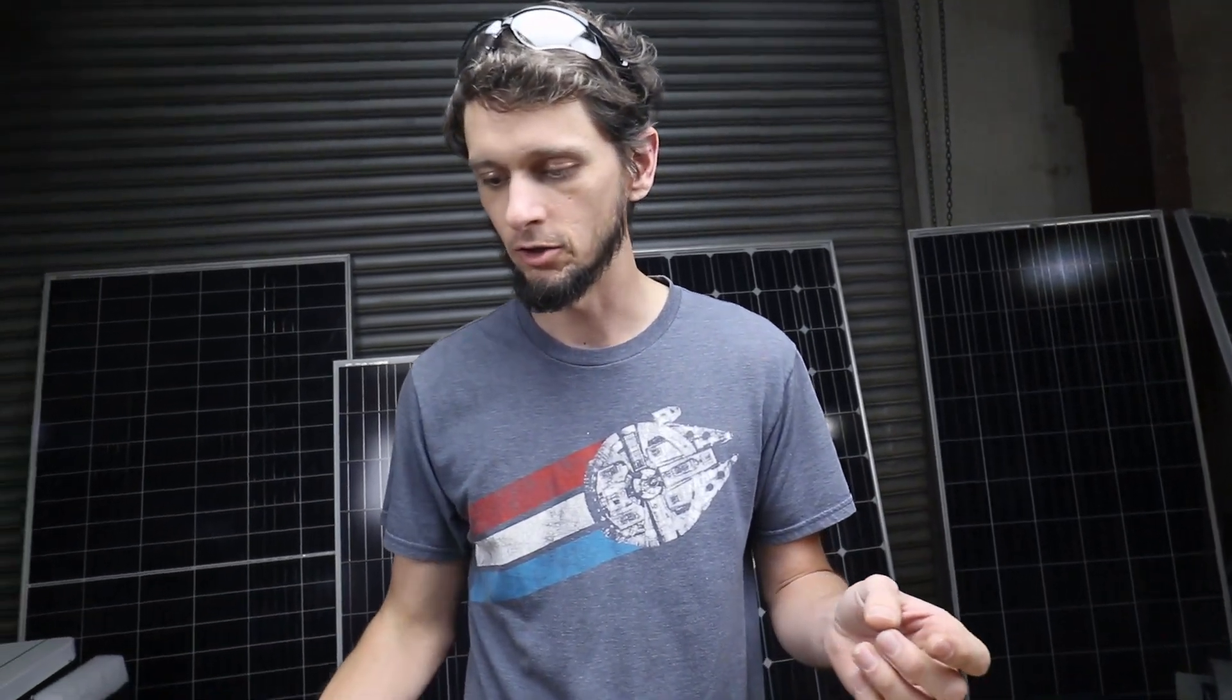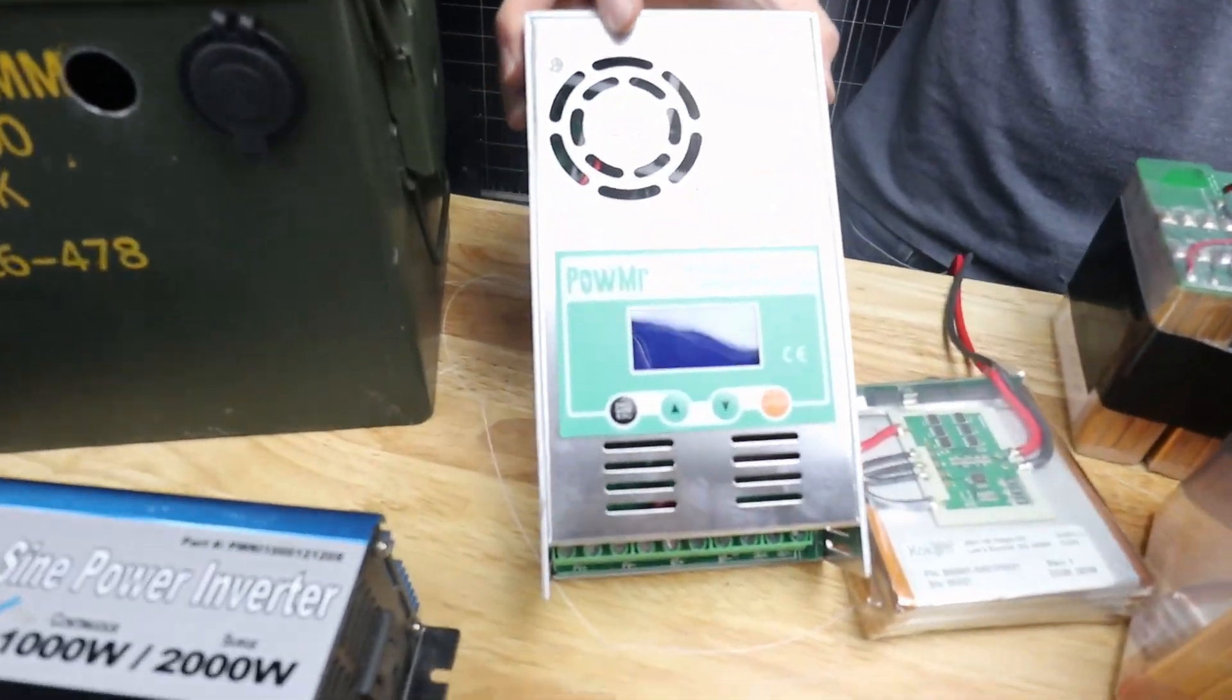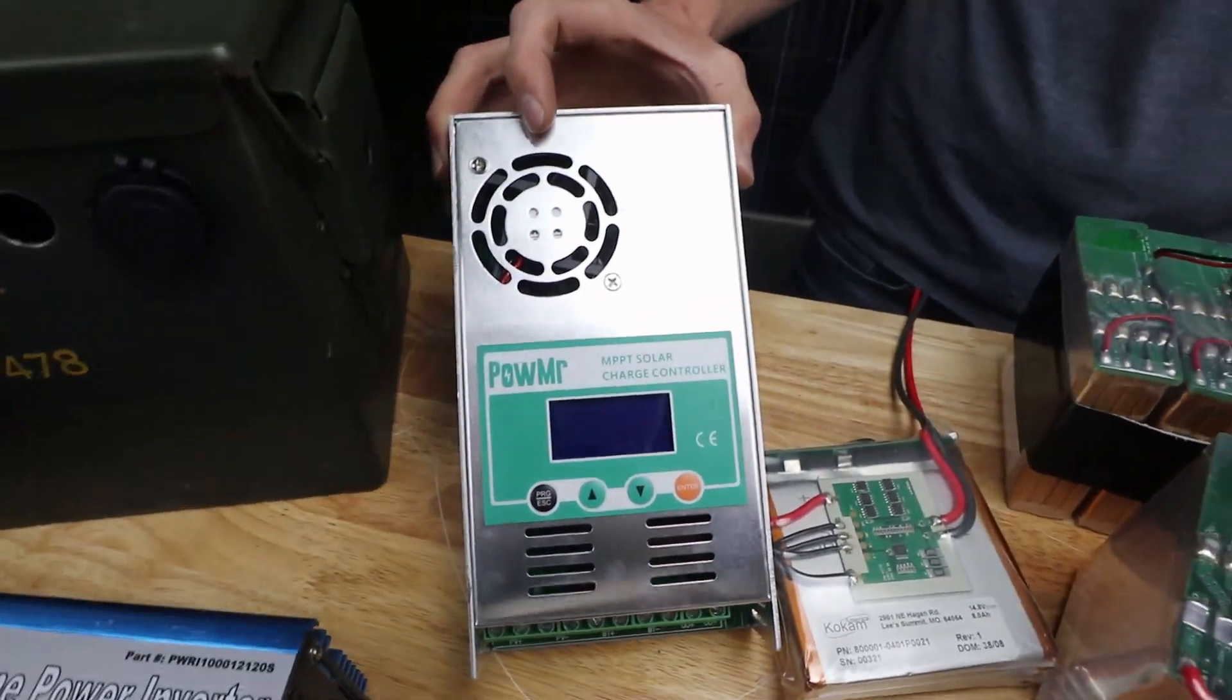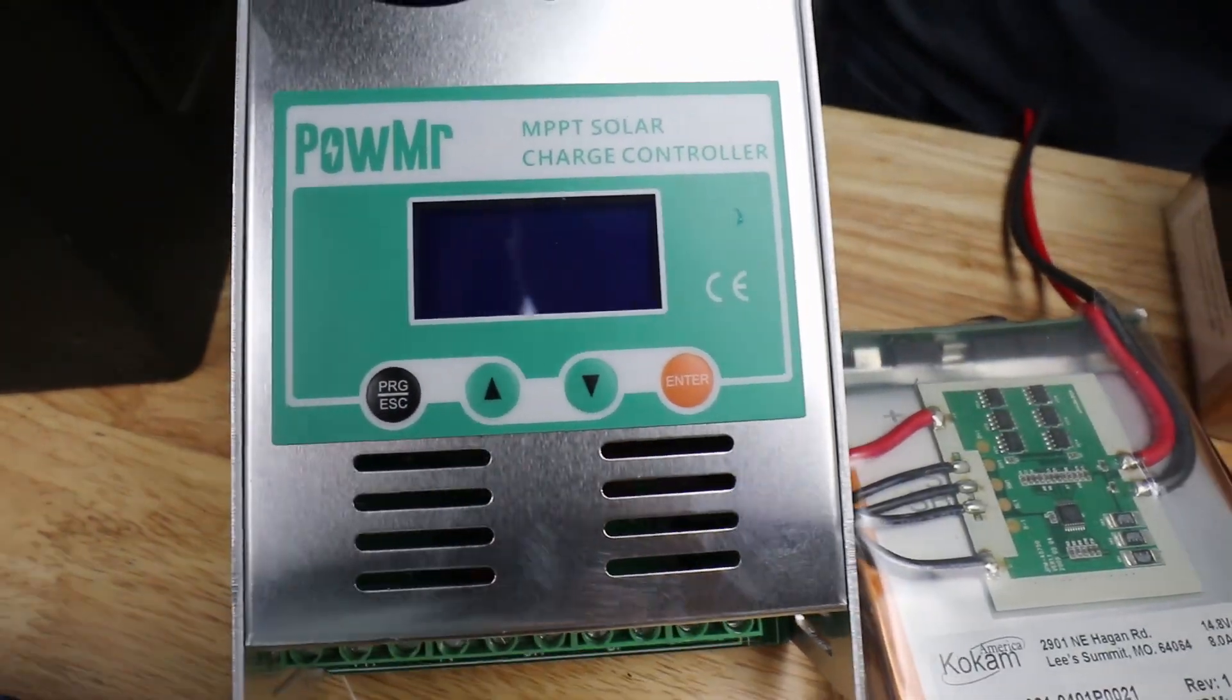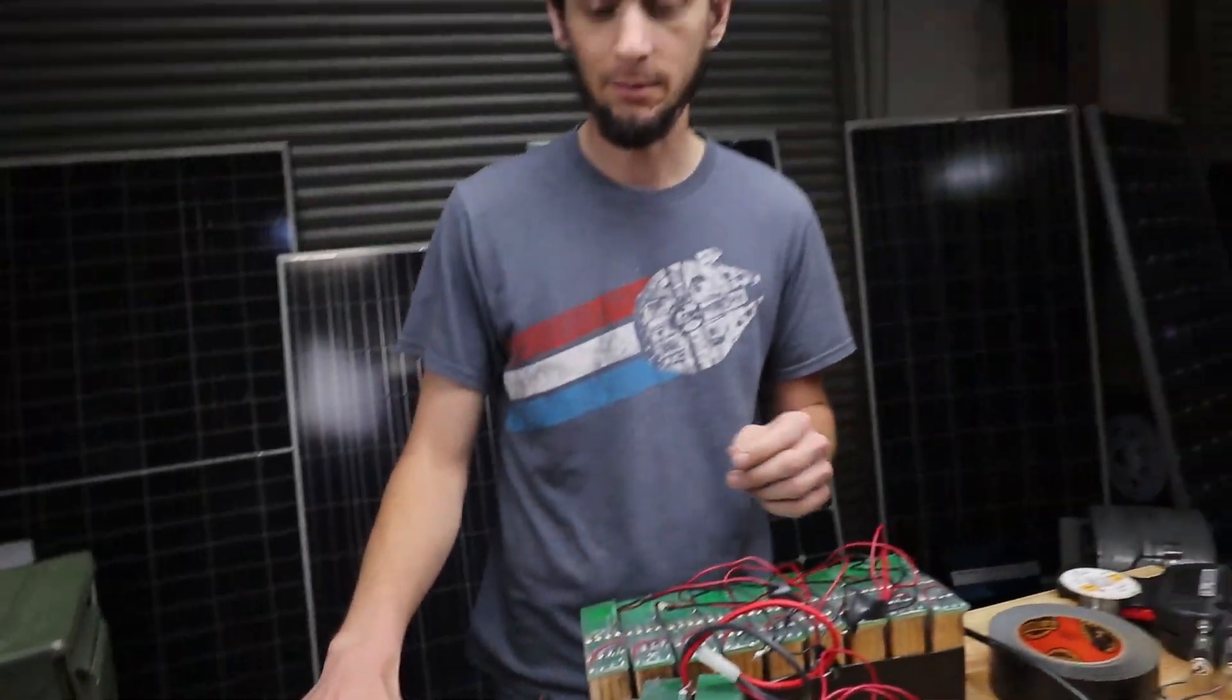The other thing is going to be your solar charge controller. So this is an inexpensive solar charge controller. You can get it for about a hundred bucks. And this will give us 60 amps worth of charging into the batteries.